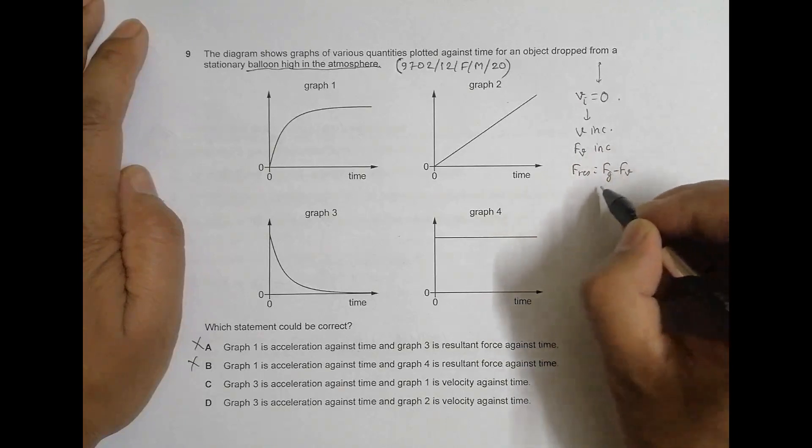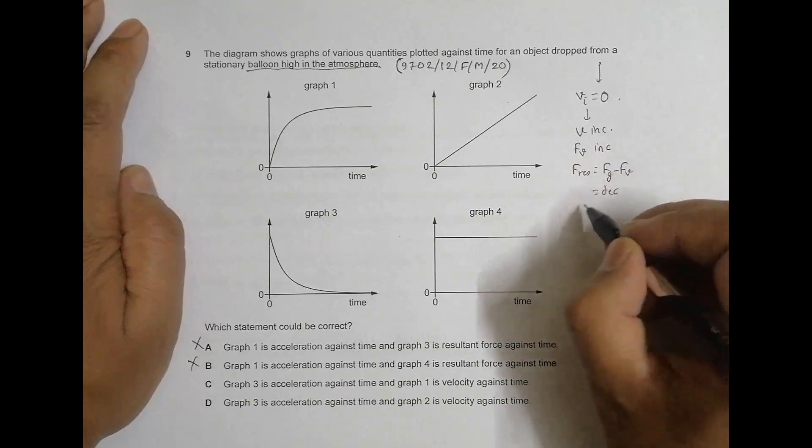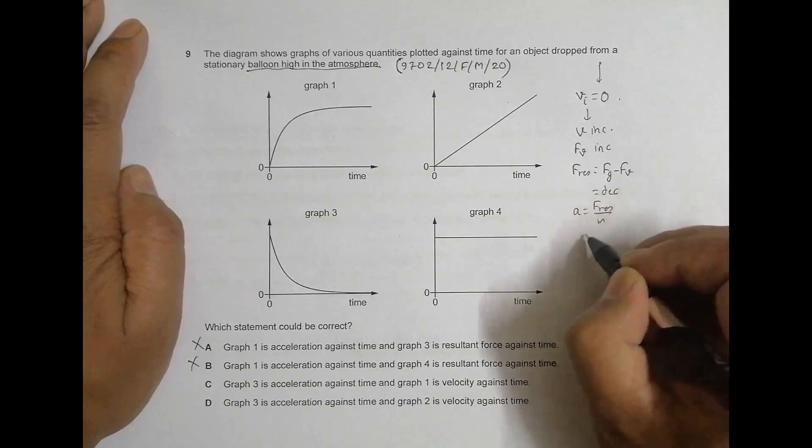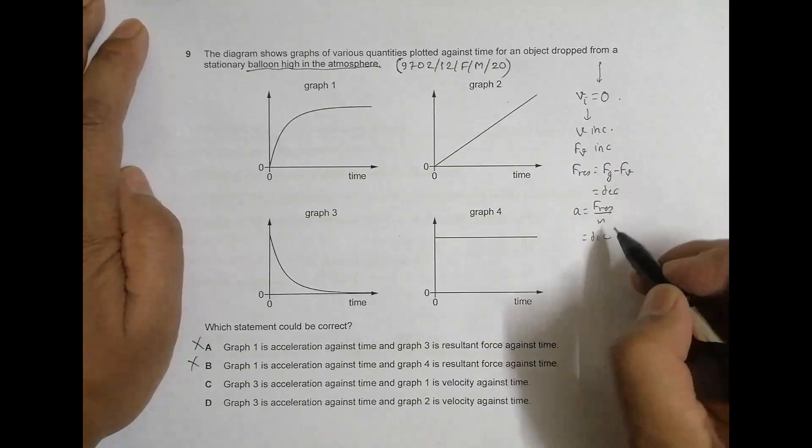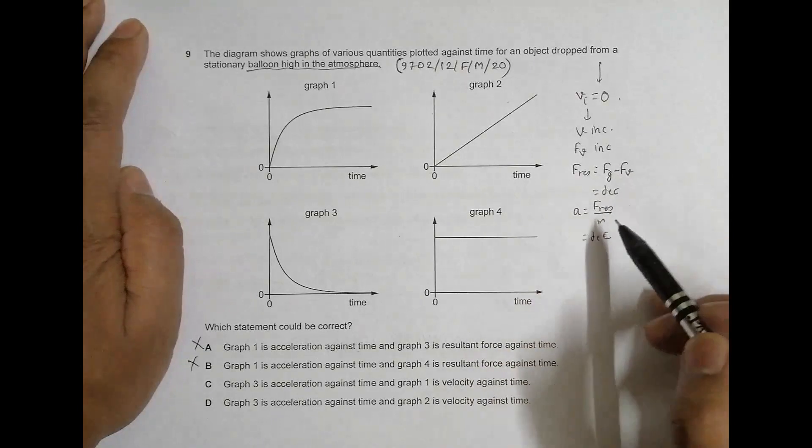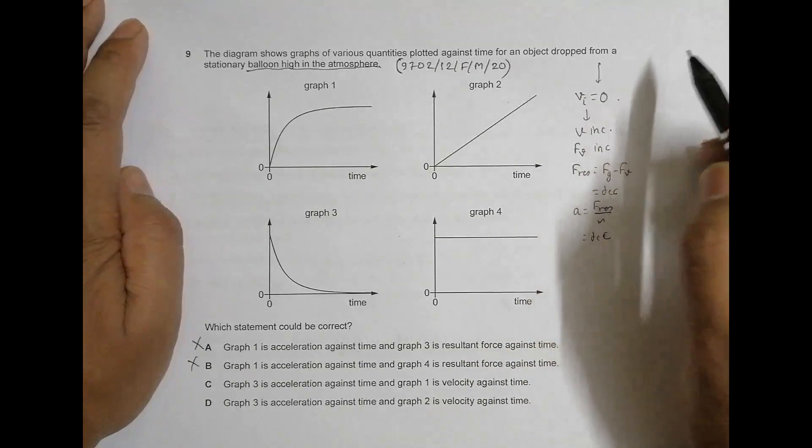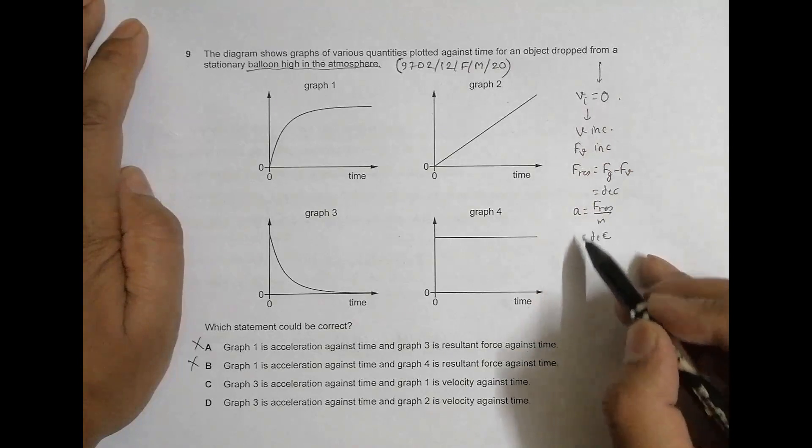Because of increasing force, the resultant force will be equal to force of gravity minus force of viscosity. So this thing should decrease. When it decreases, a equals F resultant by mass also should decrease.